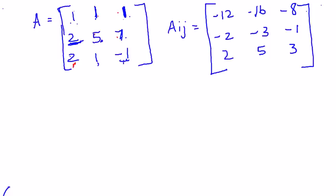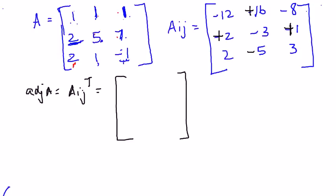Now we alternately apply signs to the cofactor matrix starting with plus. The signed cofactor matrix becomes: [−12, 16, −8; −2, −3, 1; 2, −5, 3]. Taking the transpose of this cofactor matrix gives the adjoint of A: adj(A) = [−12, 16, −8; 2, −3, −5; 2, 1, 3] — rows become columns.